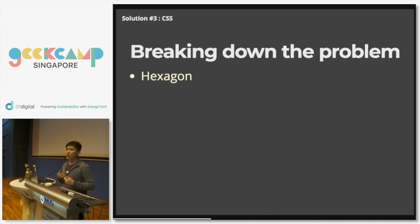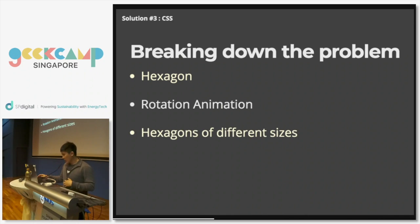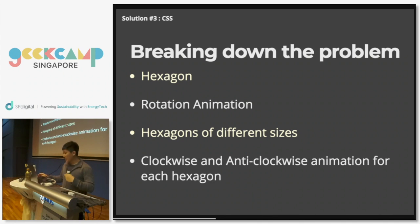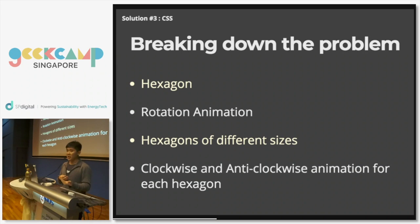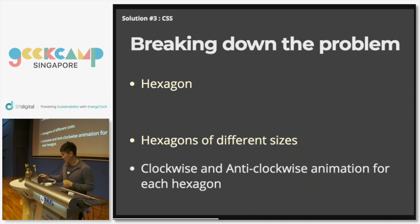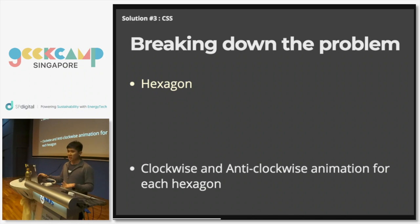Let's break it down into sizable chunks. There are a couple of hexagons rotating in different orders, so one core problem is how do you draw a hexagon using CSS? Then there's the rotation animation, hexagons at different sizes — four hexagons of different sizes — and rotation in different directions. In examining these four sub-problems, the rotation animation is relatively easy to solve. You can use the keyframe rule, implement the transform property with a rotation value going from 0 to 360 degrees applied as an infinite loop animation. Hexagons of different sizes is basically just scaling things up and down — also very simple. Clockwise and anticlockwise rotation just means applying both orientations as class names.